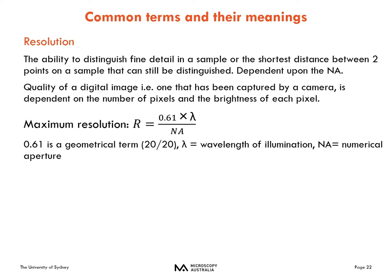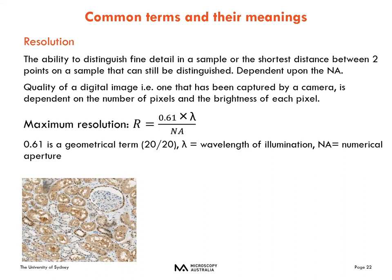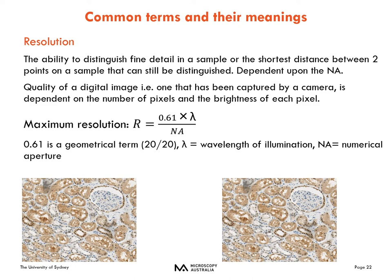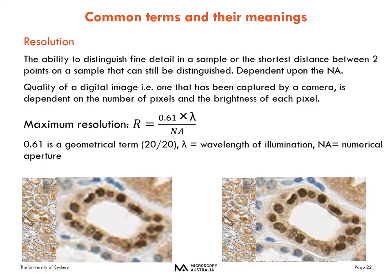Resolution in microscopy is the ability to differentiate two separate points that are close together, allowing us to differentiate and identify details within our images. The resolution of your image is dependent upon the numerical aperture. When you capture an image from a microscope it might look excellent until you zoom in and look at finer detail — a zoomed-out version of two images may look quite similar, but when zoomed in the resolution on the left image is far poorer than the right, which looks much more crisp with more distinct details and edges. Resolution can also be affected by digital imaging parameters.